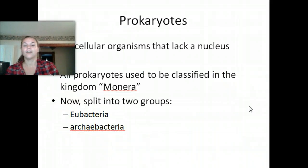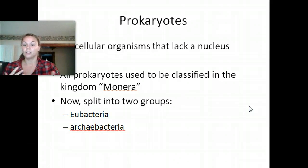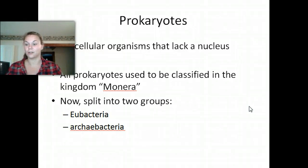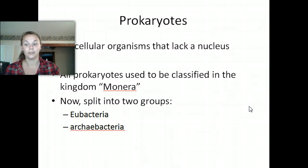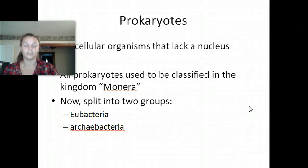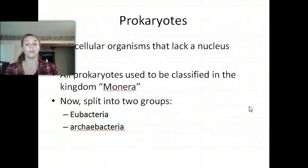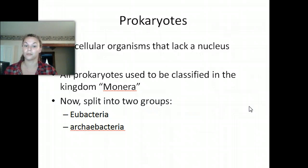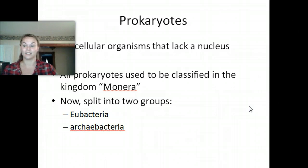We've already talked about prokaryotes — we know they don't contain a nucleus. We're going to look at how prokaryotes are classified because they actually fall under two categories. A prokaryote is a unicellular organism that lacks a nucleus. All prokaryotes used to be classified in the kingdom Monera — any single-celled organism that didn't have a nucleus. However, now that we've done more research, we've split them into two categories: Eubacteria and Archaebacteria.